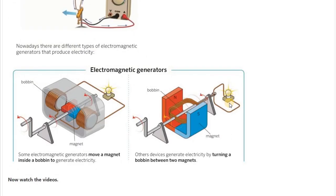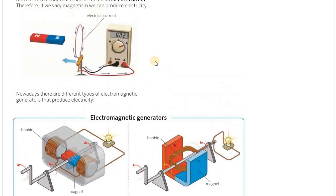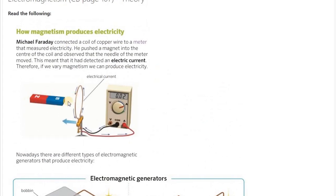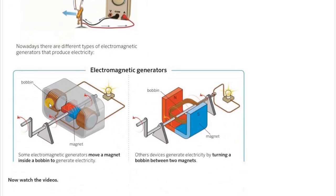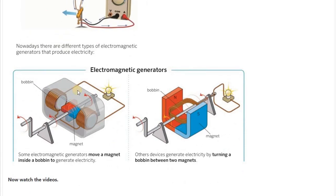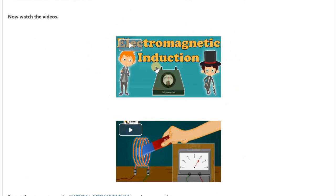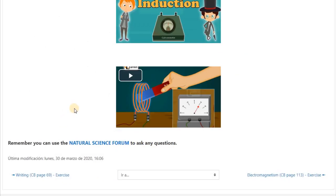And that way we can create electromagnetic generators. In some cases, we can move the magnet between two bobbins. That's exactly what Faraday had done in his experiment. And when moving this magnet, we produce electricity. Or in some cases, we can move the bobbin between two magnets, and we produce electricity in the same way. And here you have some videos of that experiment.